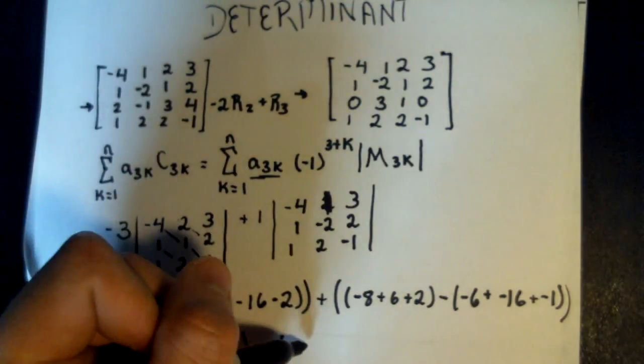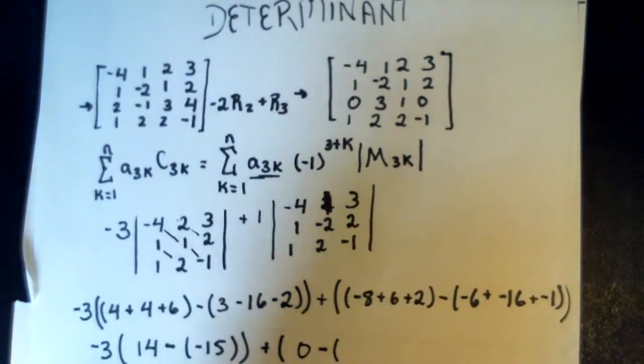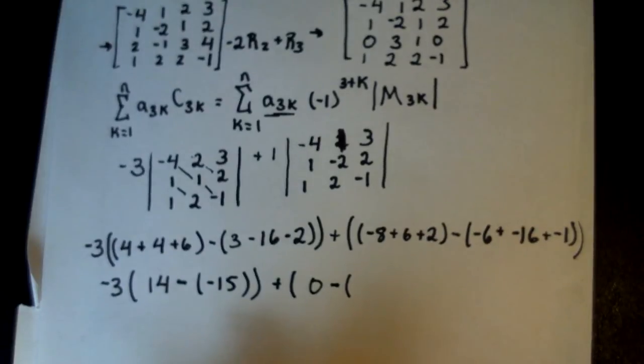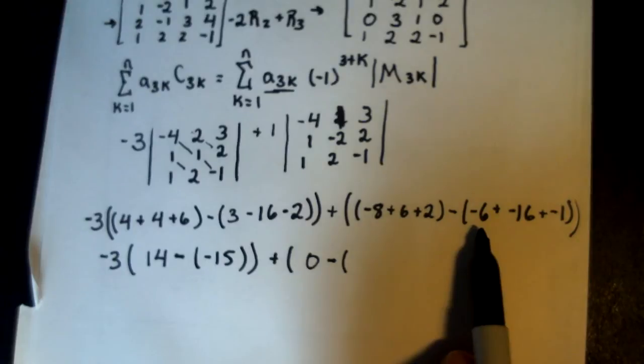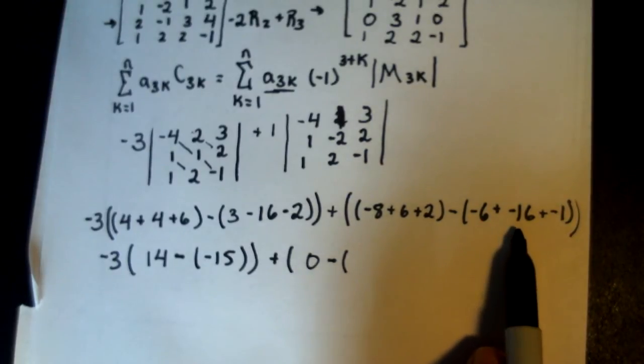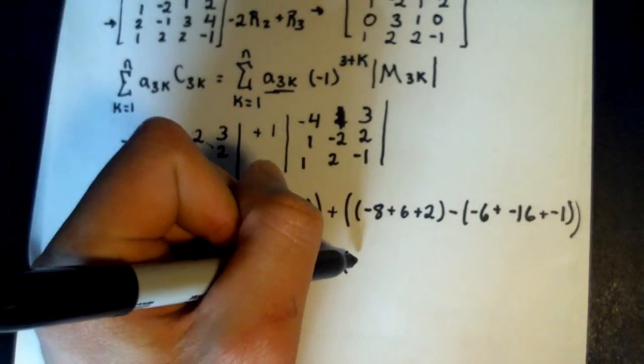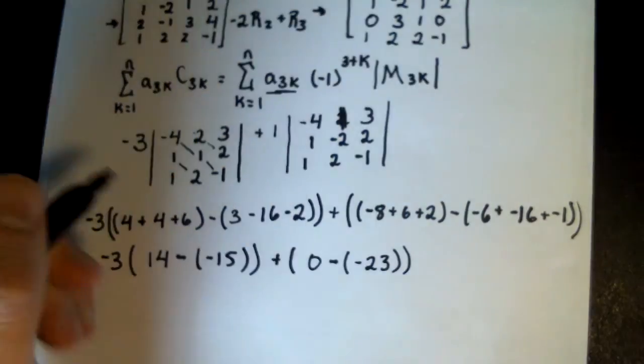And we're going to add. That's going to be a 0, minus, remember, this is where you can mess up just by simple algebra. Let me bring this up. You're going to keep this negative here, and you have negative 6 plus negative 16 plus negative 1. That's negative 23.